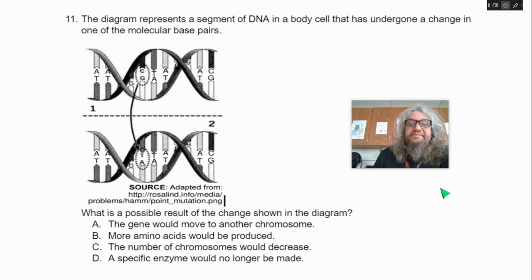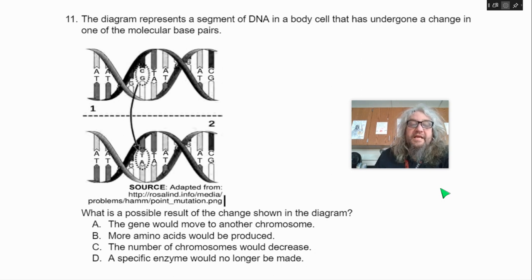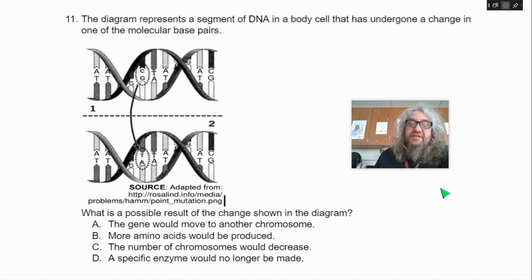Number 11. The diagram represents a segment of DNA in a body cell that has undergone a change in one of the molecular base pairs. What is the possible result of the change shown in this diagram? A, the gene would move to another chromosome; B, more amino acids would be produced; C, the number of chromosomes would decrease; D, a specific enzyme would no longer be made.